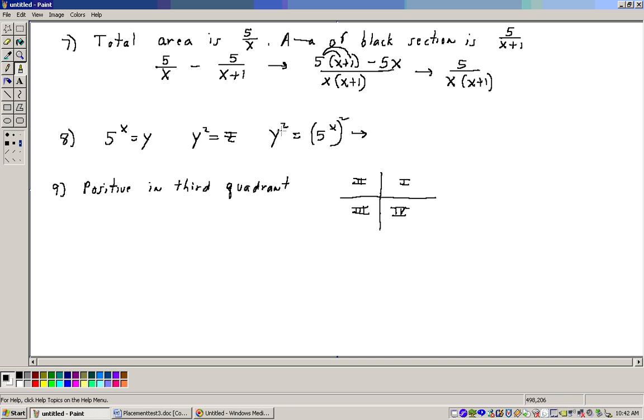Well, y squared would be, take this value for x, what y is, 5 to the x, and we need to square it. So in other words, if y equals 5 to the x, then y squared equals 5 to the x squared. Now when you have exponents raised to exponents, you multiply, so that would give us 5 to the 2x power.